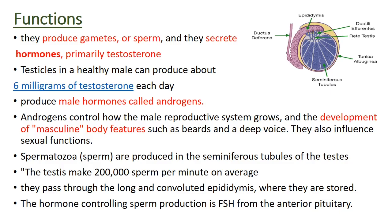Spermatozoa are produced in the seminiferous tubules of the testes. The healthy testes produce 2 lakh (200,000) sperm per minute. The sperm then pass through the long convoluted epididymis where they are stored. The hormone controlling sperm production is follicle stimulating hormone (FSH), released from the anterior pituitary.